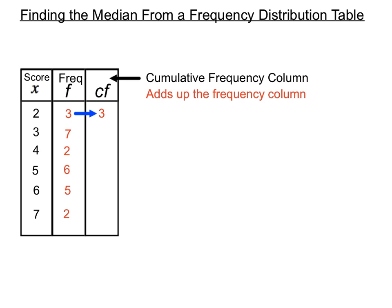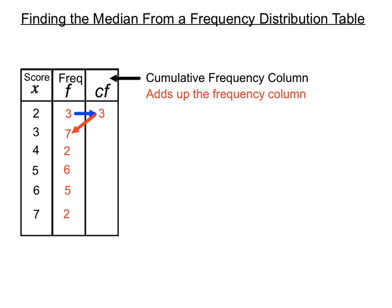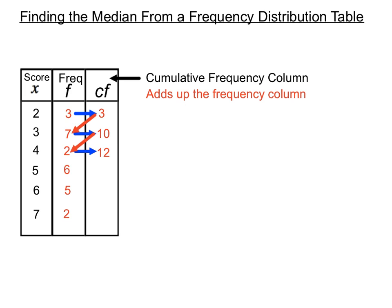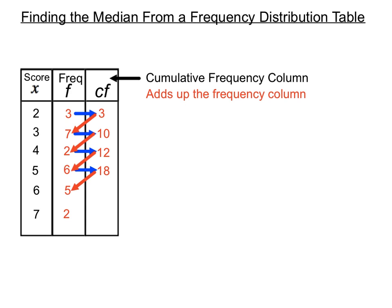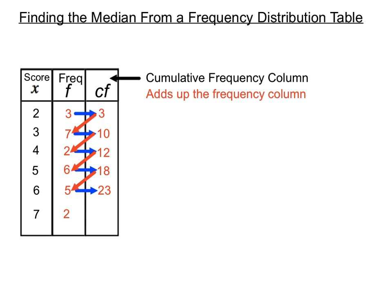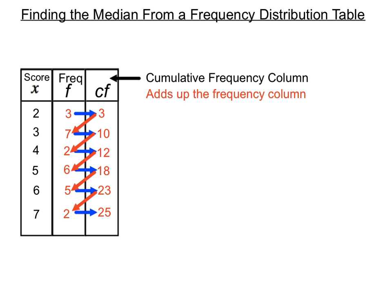Adding that frequency column up: the first item is three, so the total so far is three. We add the next frequency to get ten — there are ten scores so far. Then we add the next frequency to make 12, then adding six gives a running total of 18, adding five gives 23, and we get a final total of 25 in the cumulative frequency column.